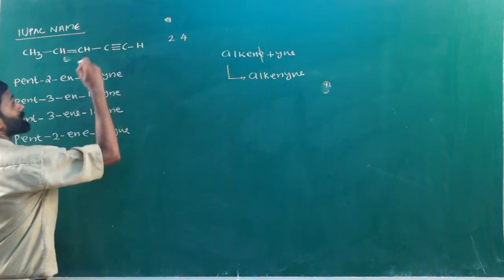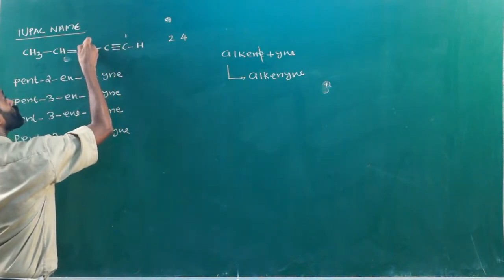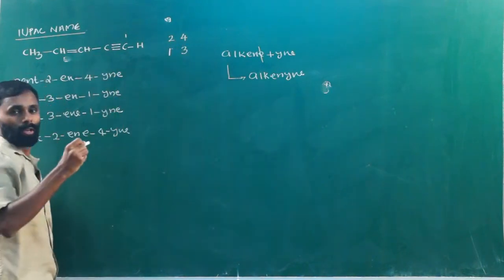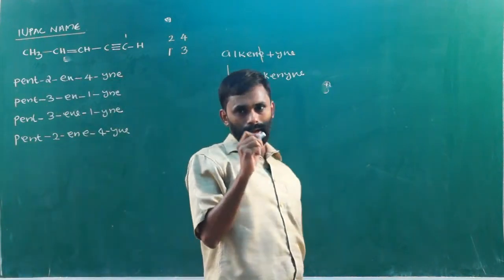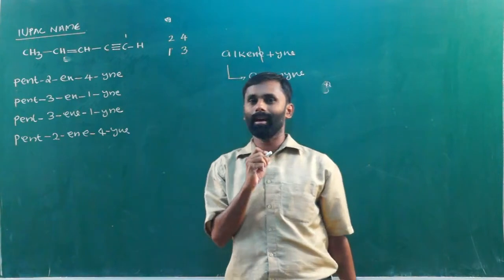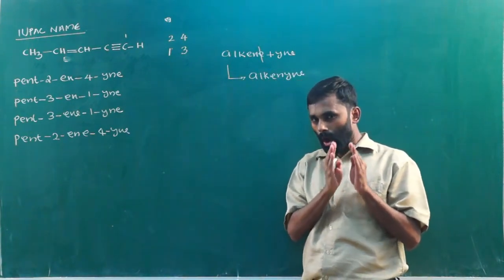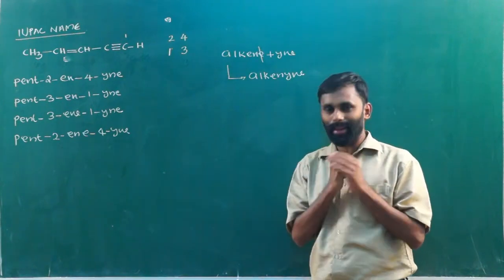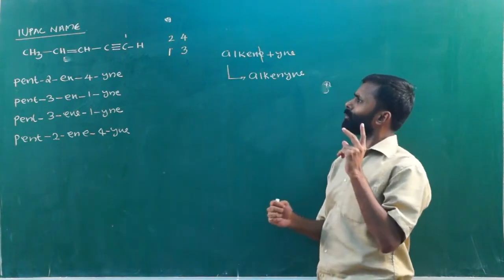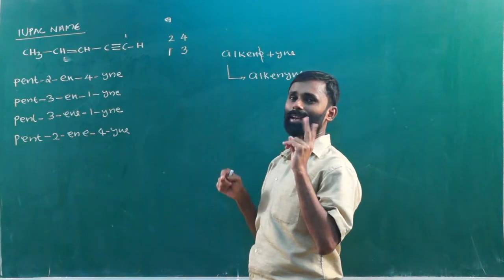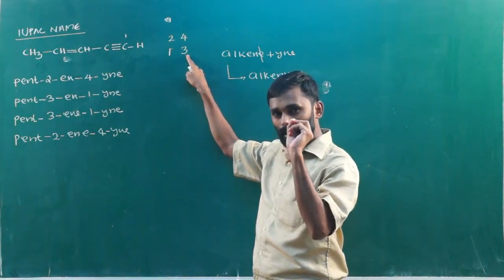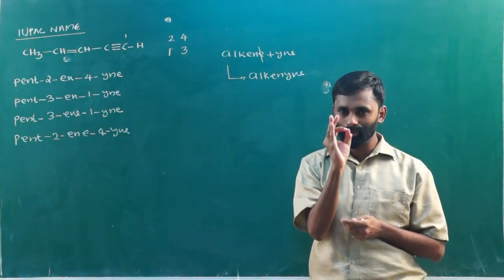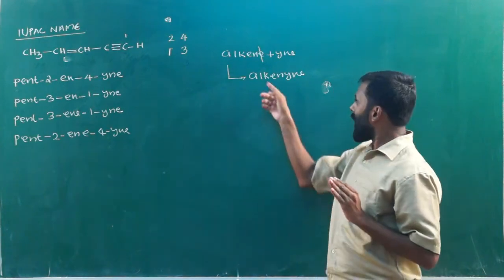If you start with the triple bond, you will number one, two, three — triple bond is at one, then two, then three. So, double bond and triple bond — you will name accordingly. Double bond and triple bond preference is a concept. If you start from one end, you get a right leg number and left leg number. First case gives you two, four; second case gives you one, three. So we start with the lowest combination.